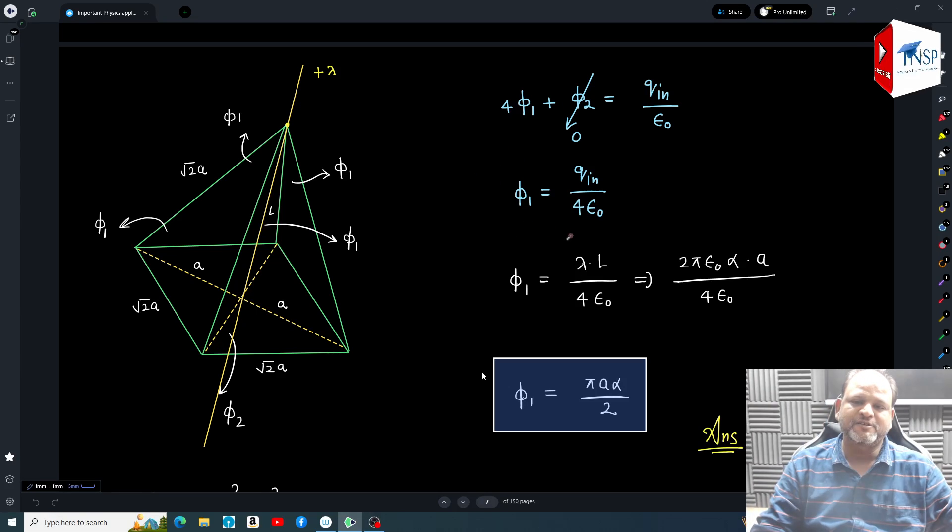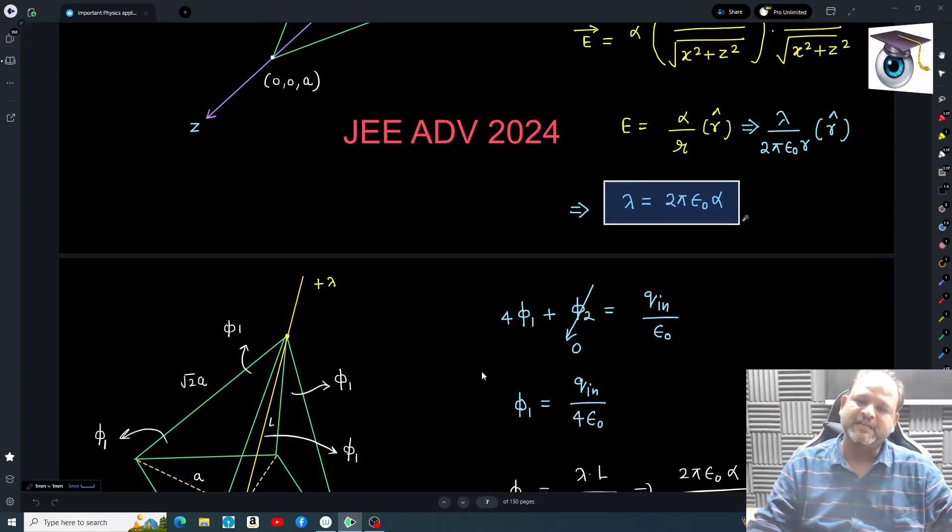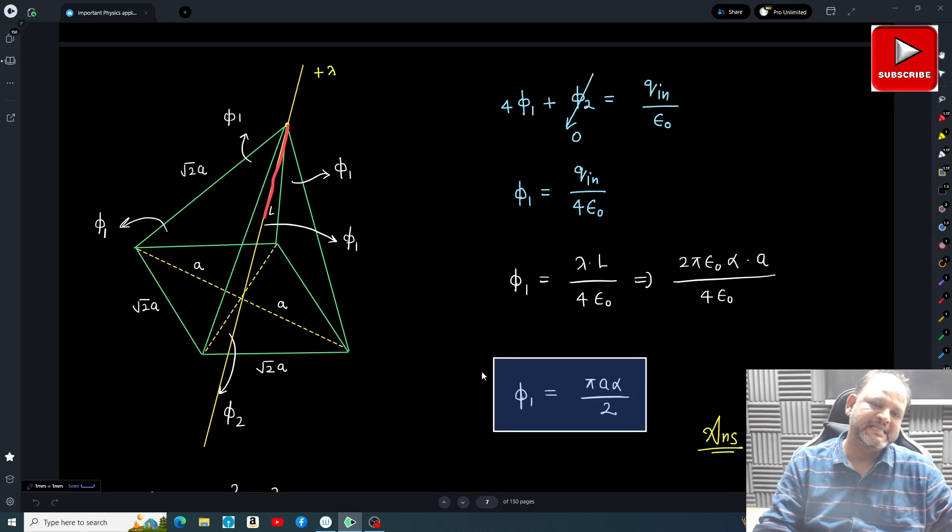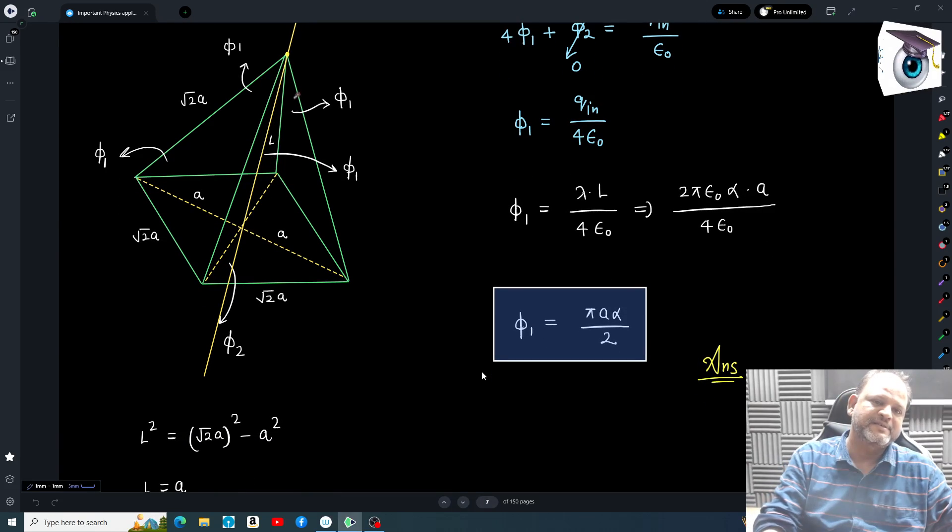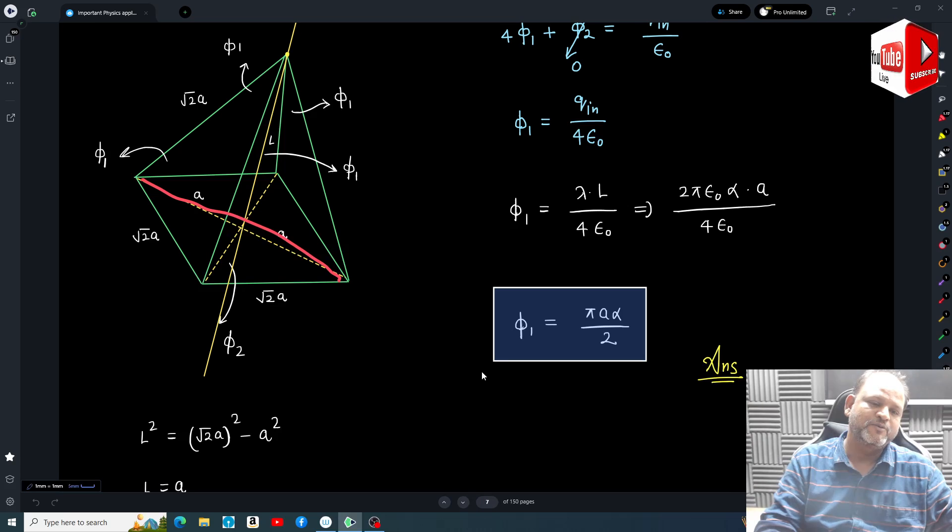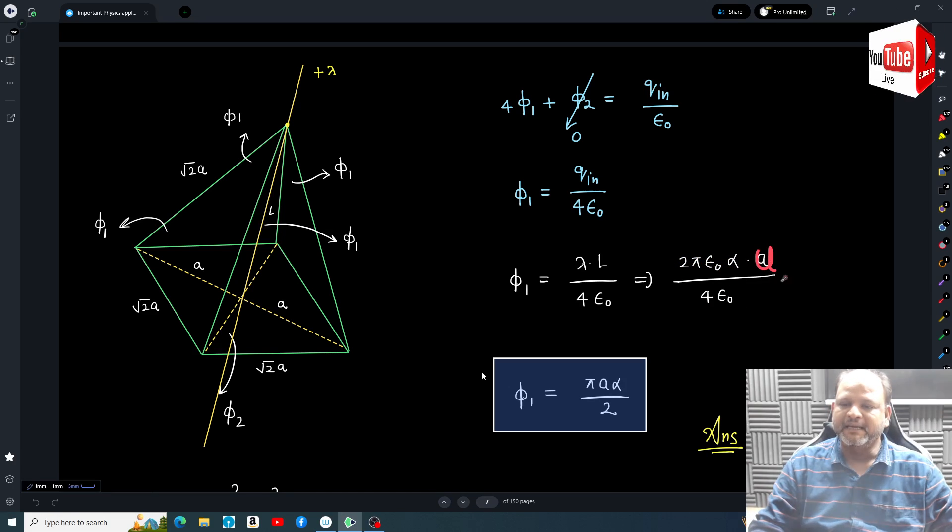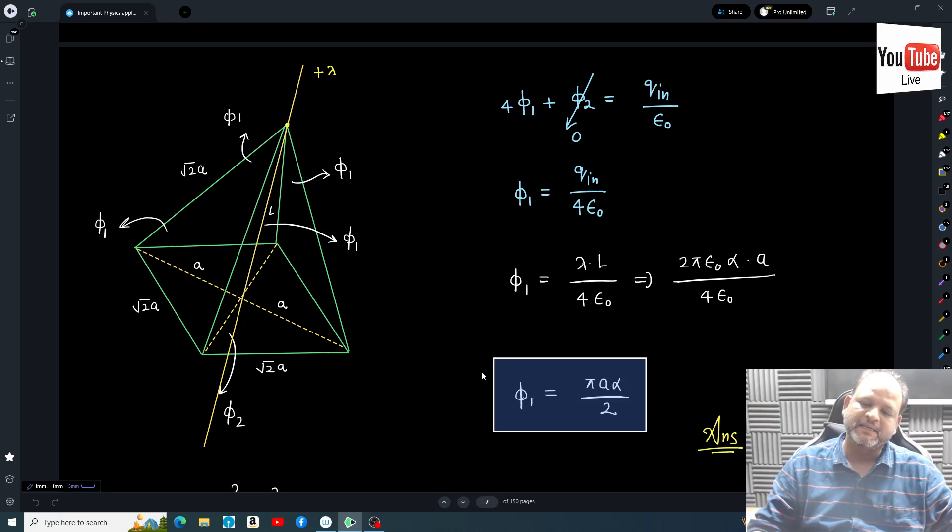I can say φ₁ = q_in/4ε₀. Then q inside - let's say length of the wire inside is l, but we don't know this l, it's not given in the problem. So I'll write φ₁ = λl/4ε₀. First thing we calculated this λ = 2πε₀α. After this we have to calculate this l value, the length of wire inside the pyramid. It's very easy - this distance is √2a, this distance also √2a, half of that is a. It's a right angle triangle, so l² = this square minus this square, so l is also coming as a only. Let's substitute: λ = 2πε₀α times a, and this is by 4ε₀. Simplify this and you get φ₁ = πα a/2. This is the final answer.